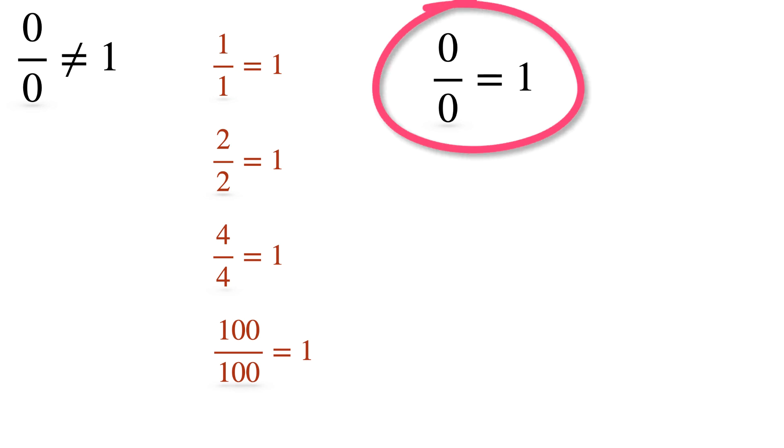It is a well-established fact that any number divided by itself gives 1 as a quotient. Example: 1 by 1, 2 by 2, 4 by 4, 100 by 100 gives 1 as quotient. This would certainly make 0 by 0 equals 1.